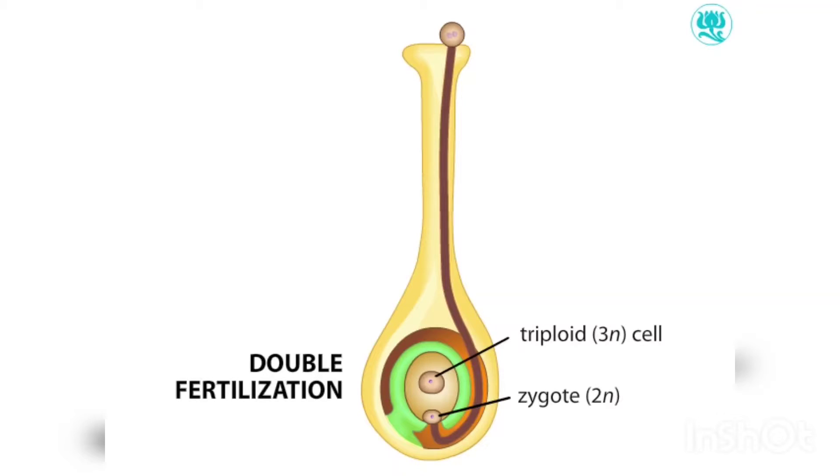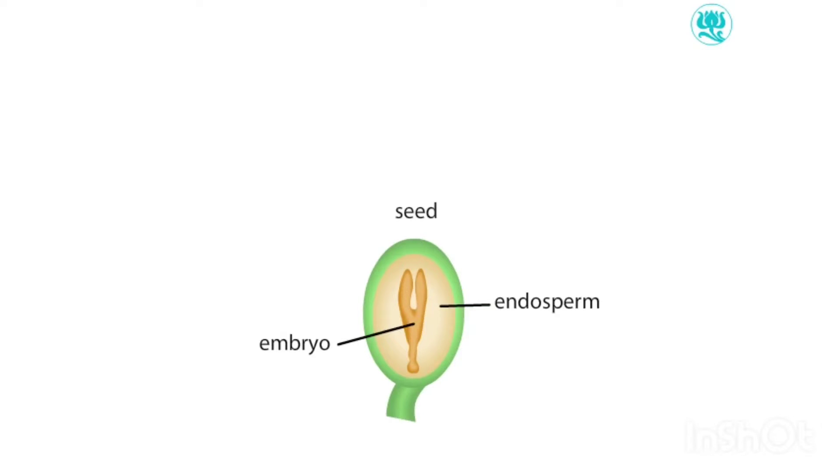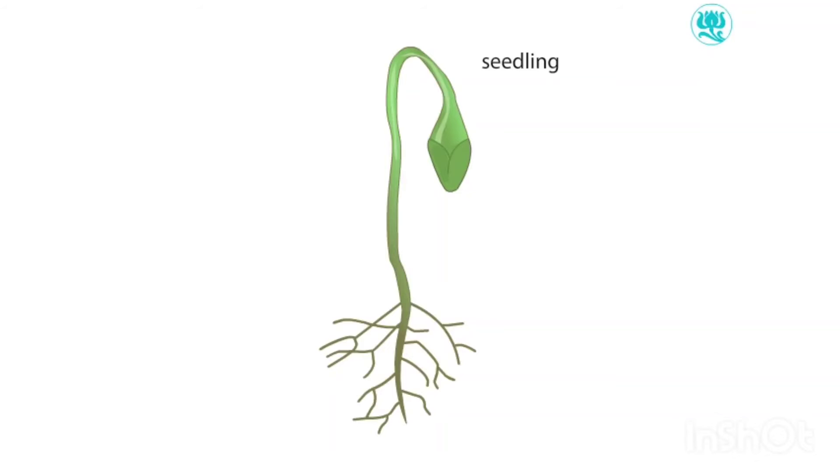The zygote, which begins the next sporophyte generation, develops into the embryo, while the triploid cell develops into the nutritive endosperm of the seed. The seed germinates, and when the sporophyte matures, the life cycle begins again.